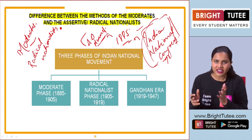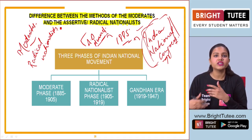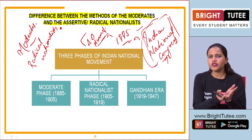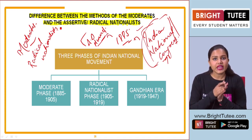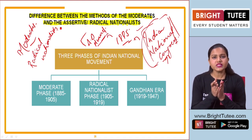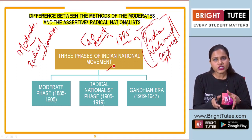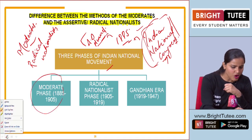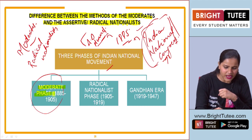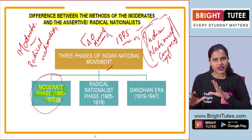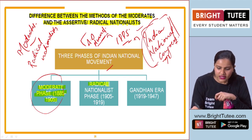The Indian National Movement was not consistent throughout. Just like the French Revolution unfolded in different phases, and the Russian Revolution had different aspects, similarly the Indian National Movement also had various phases. The first phase can be referred to as the moderate phase, with a timeline of 1885 to 1905-1906.